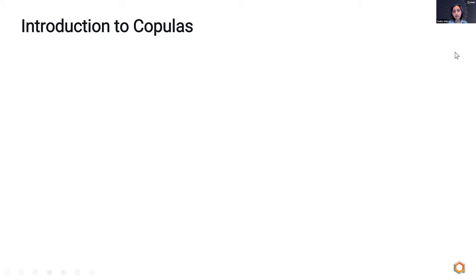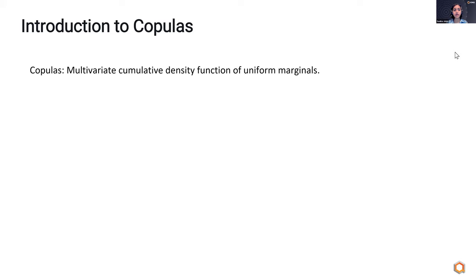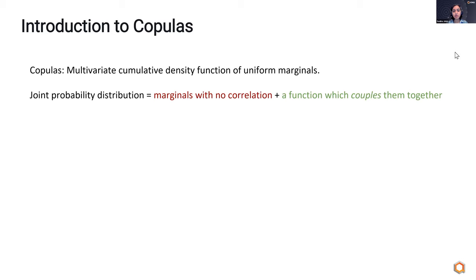In statistics and probability theory, a common way to study these joint distributions is through the use of copula functions, especially in finance. Copula functions are the multivariate CDF, or cumulative density function, of uniform marginals. What they allow you to do is express a joint distribution function as a combination of marginal distributions that have no correlation to each other, plus a function which couples them together — and this coupling function is known as the copula.